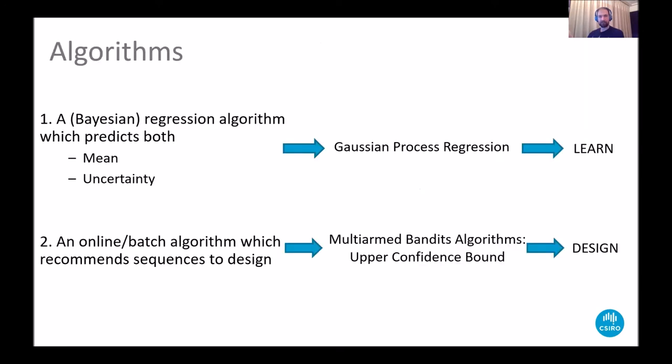So we have two algorithms that we work for. One is for learning, one is for designing. For learning, we have Bayesian regression algorithm which predicts the whole mean and uncertainty of the function that assigns a label to a feature, so a TIR to a sequence, and we have so-called multi-arm bandit algorithm, and in its upper confidence bound version to choose designs. I'll show it in a graphical version in a moment, so it's much easier to understand.